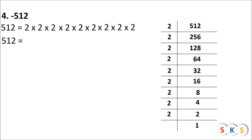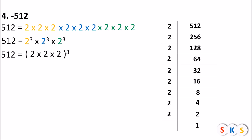We make groups of three same numbers: 2 × 2 × 2 is the first group (2 raised to 3), 2 × 2 × 2 is the second group (2 raised to 3), and 2 × 2 × 2 is the third group (2 raised to 3). Therefore 512 equals (2 × 2 × 2) whole raised to 3, which is 8 raised to 3. So 512 is the cube of 8, meaning the cube root of 512 is 8. Therefore the cube root of −512 is −8.